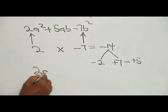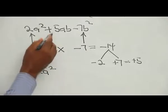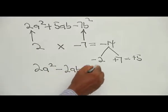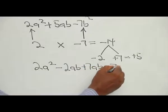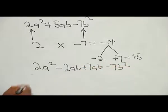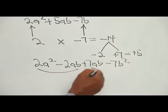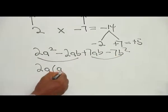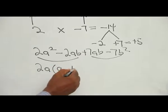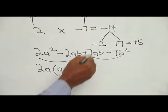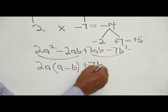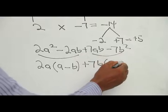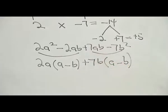We replace plus 5AB with minus 2AB plus 7AB, giving: 2A squared minus 2AB plus 7AB minus 7B squared. Pairing the first two terms, 2A is common, leaving 2A(A minus B). Pairing the last two terms, 7B is common, leaving 7B(A minus B).